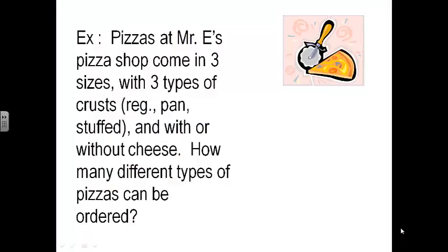So we're going to talk about probability rules today. Our first example: Did you know I have a pizza shop? Pizzas at Mr. E's Pizza Shop come in three sizes, with three types of crust — either regular, pan, or stuffed — and with or without cheese. So how many different types of pizza can we order?